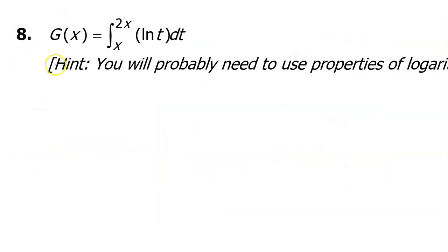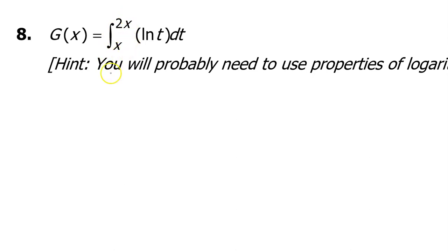We need to do the same thing for problem number eight. The first step will be to find the derivative of capital G of x. However, this is not the common case that we had before — we don't have a constant for the lower limit and we don't have simply x for the upper limit. So we need to use the general form of the Second Fundamental Theorem of Calculus.